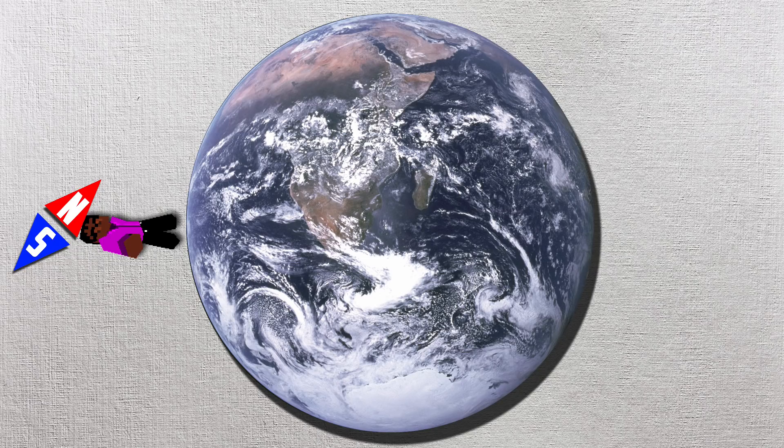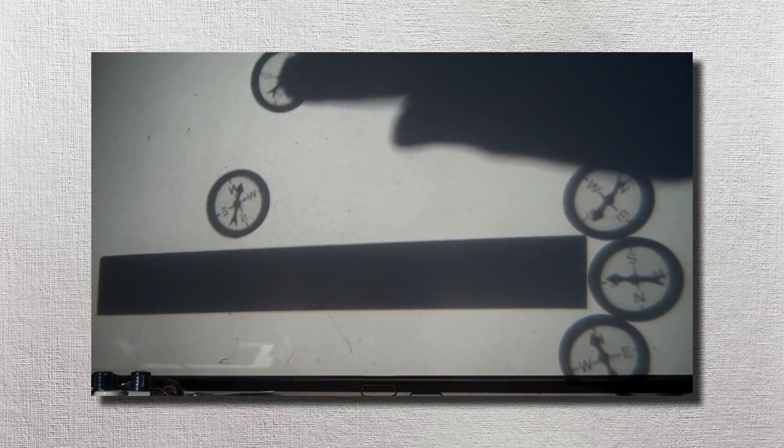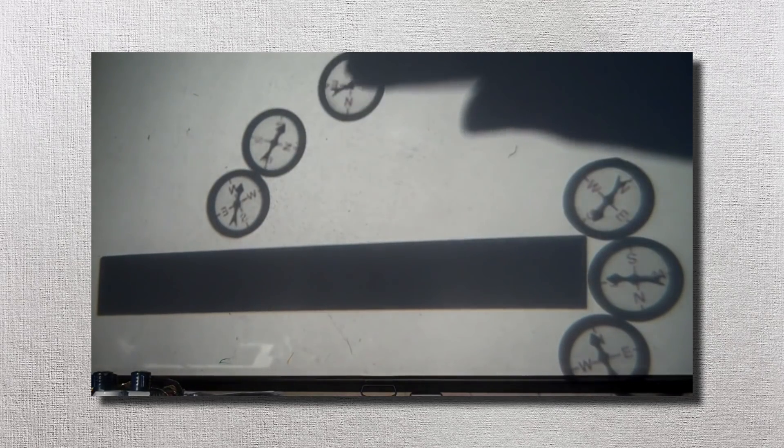Like many other times that Dubé makes predictions as to how things should work on the globe earth, Dubé completely fails to understand the very model he is trying to debunk. You see, compasses don't point towards the north pole.